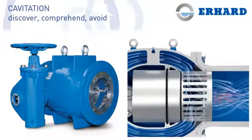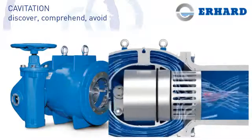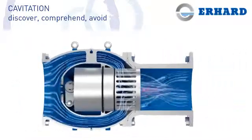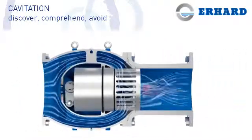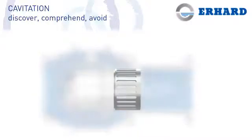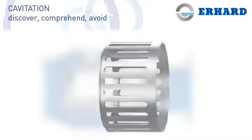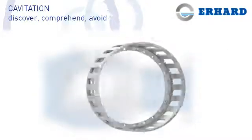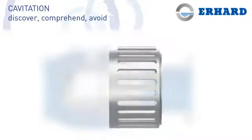Spatial control inserts, for example, ensure that instead of at the body wall, the cavitation takes place in the centre of the pipe. It doesn't cause any harm there.